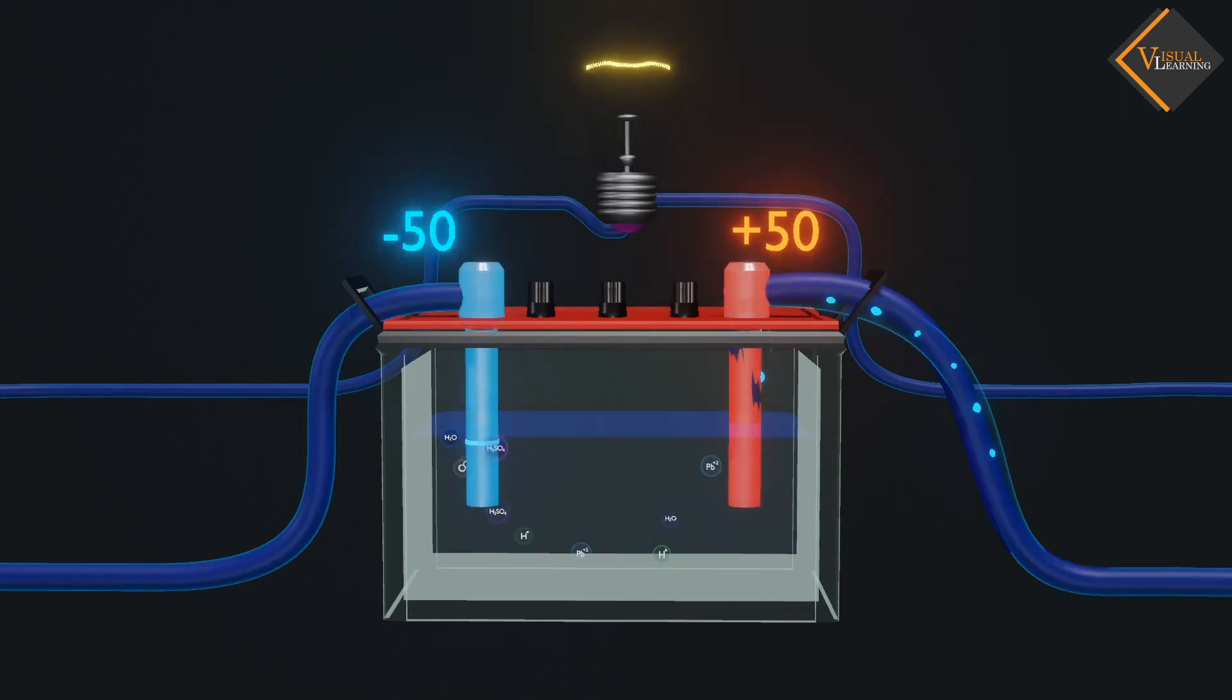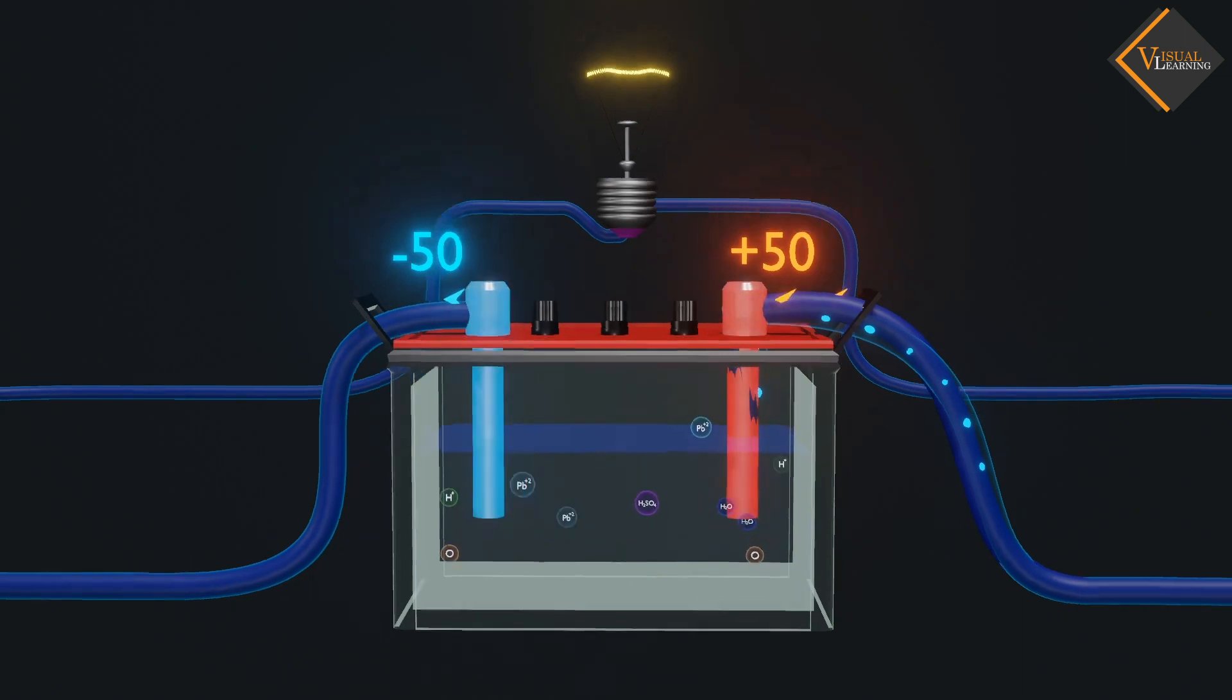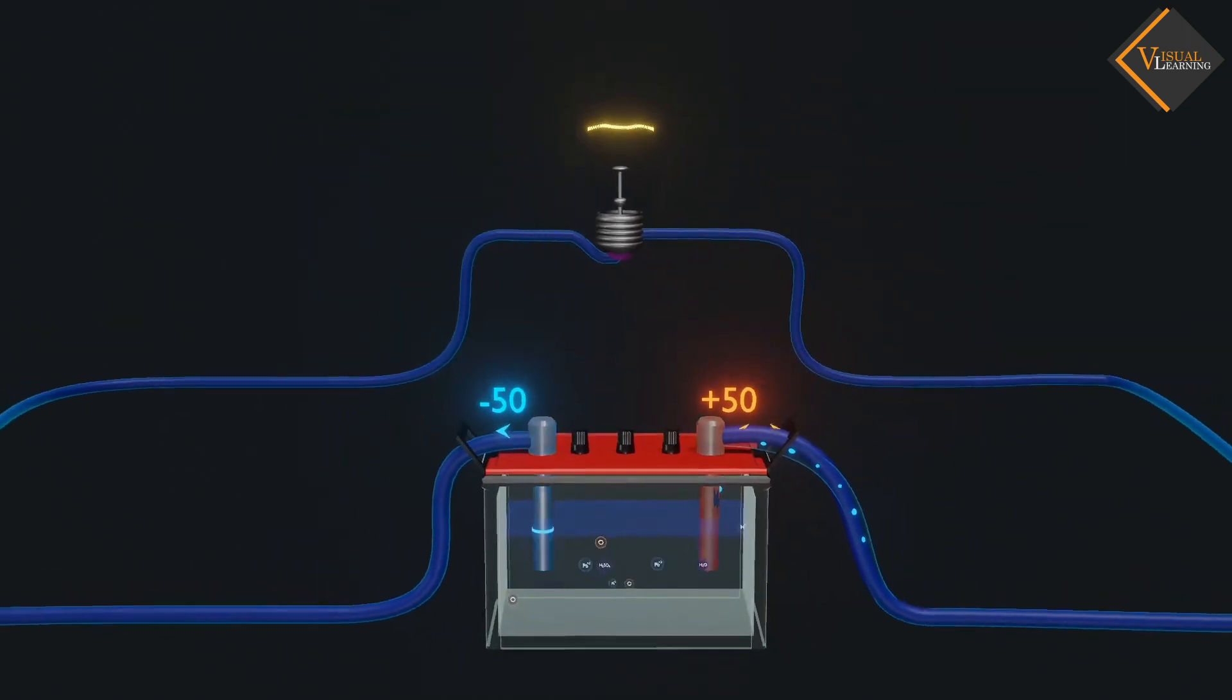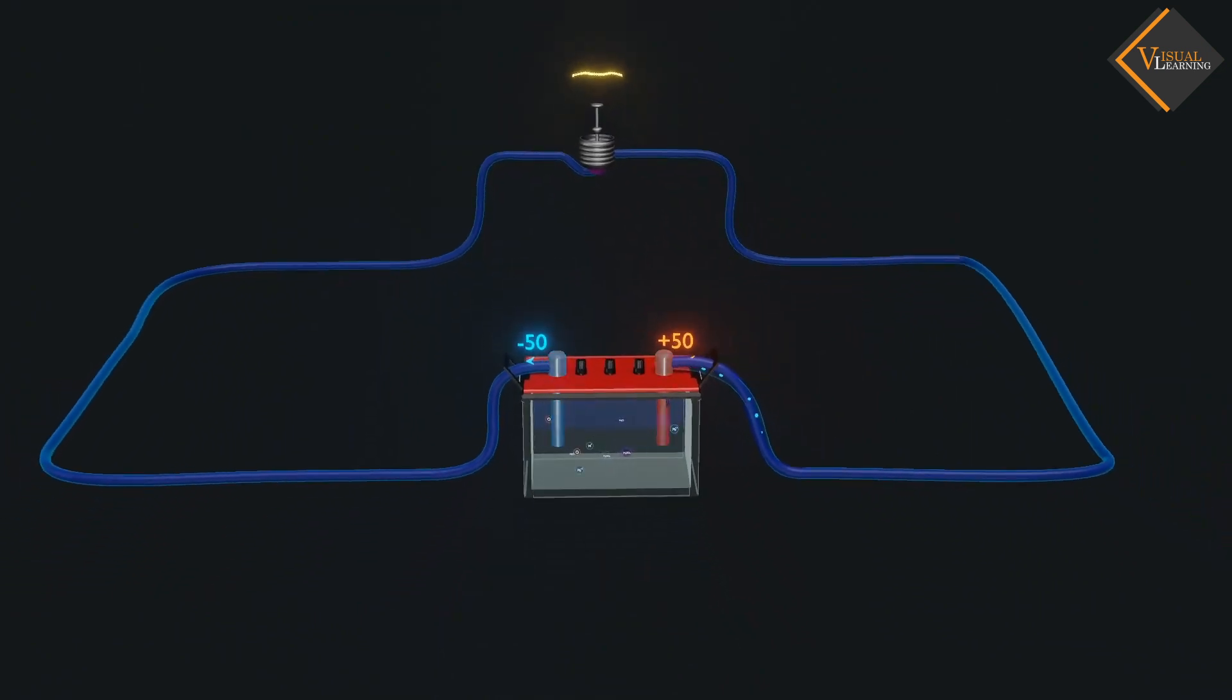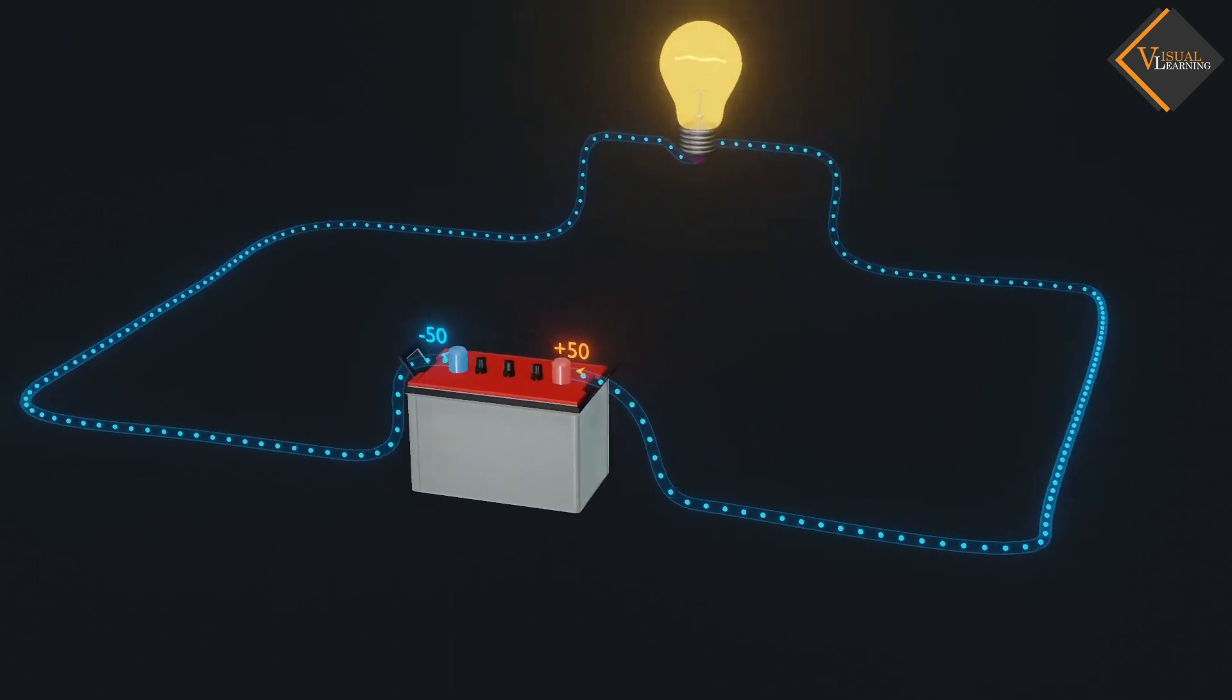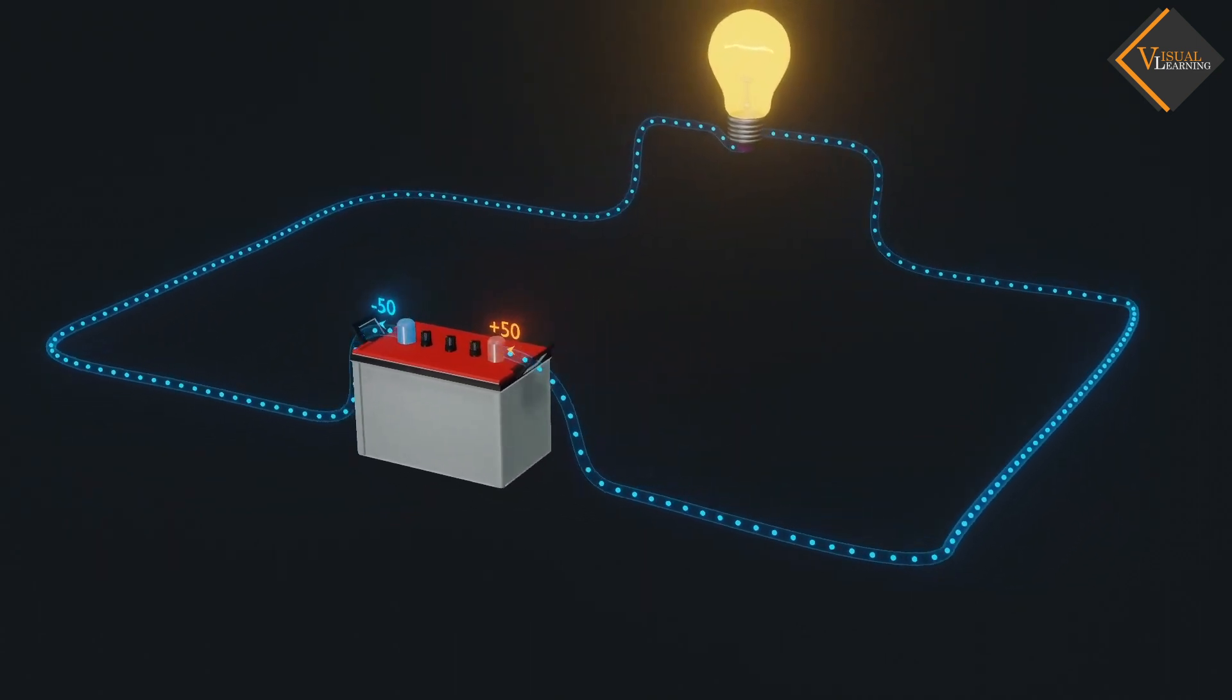Now, as we know, electrons are repelled by negative charge and attracted by positive charge. So, the combination of these electric potentials makes the electrons flow in a particular direction. And hence, current is produced in the wire.